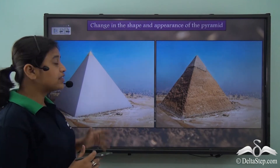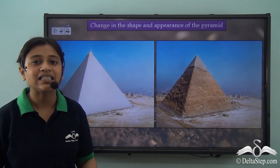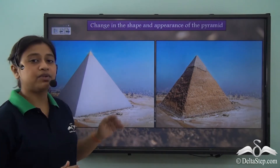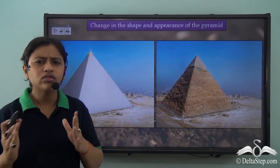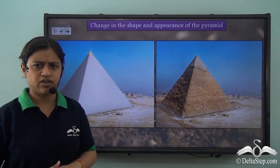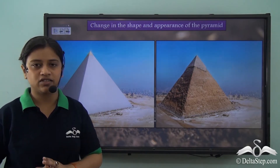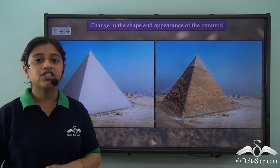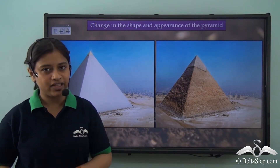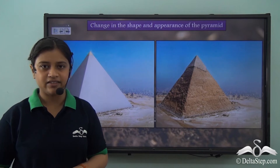You can see the physical appearance of the pyramid has completely changed. There is a change in the physical appearance while there is no change in the chemical composition — it remains as it is, just the look changes. So today in this video we will be learning about the second type of weathering, and that is mechanical or physical weathering.